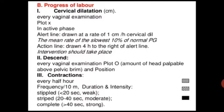Progress of labor is assessed by cervical dilatation in centimeters at every vaginal examination, plotted as X. In the active phase, an alert line is drawn at the rate of one centimeter per hour of cervical dilatation, meaning a rate slower than 10% of normal primigravida. The action line is drawn four hours to the right of the alert line, at which point intervention should take place. Descent is plotted at every vaginal examination as the amount of head palpable above the pelvic brim. Contractions are recorded every half hour: frequency per ten minutes, duration, and intensity.